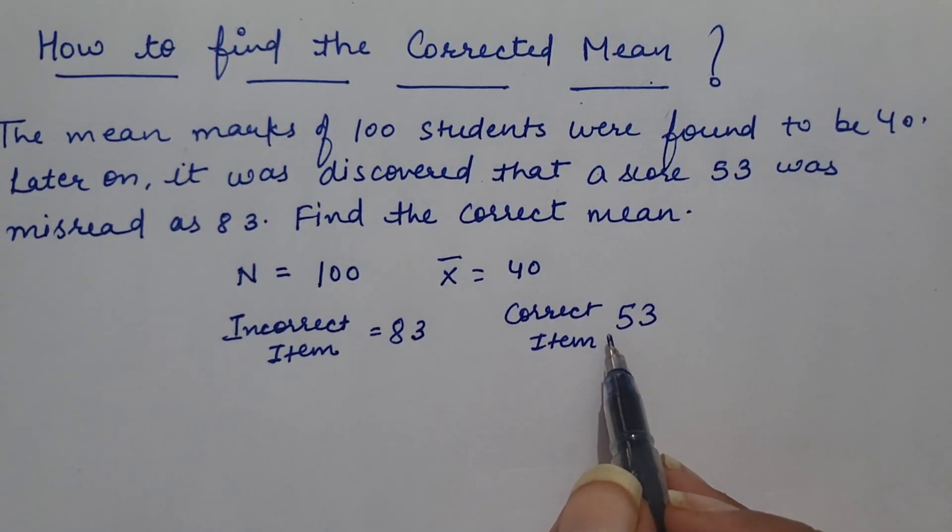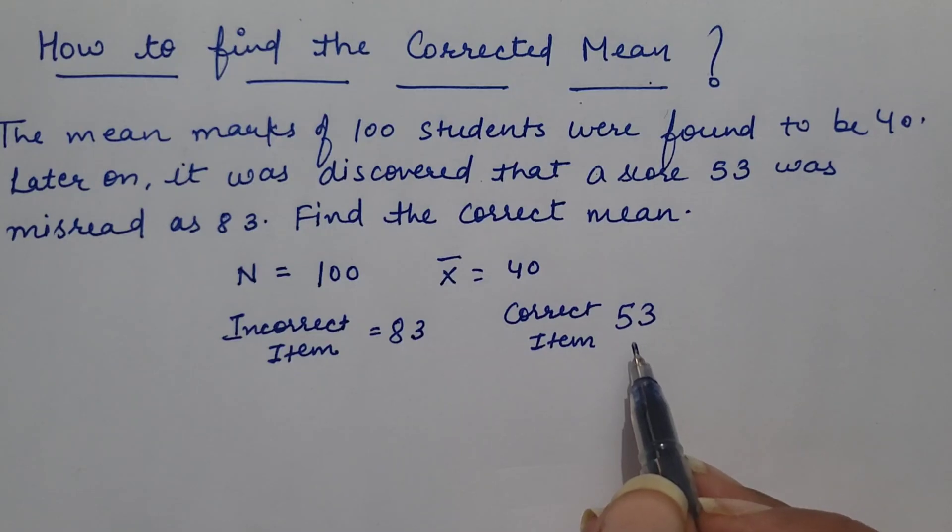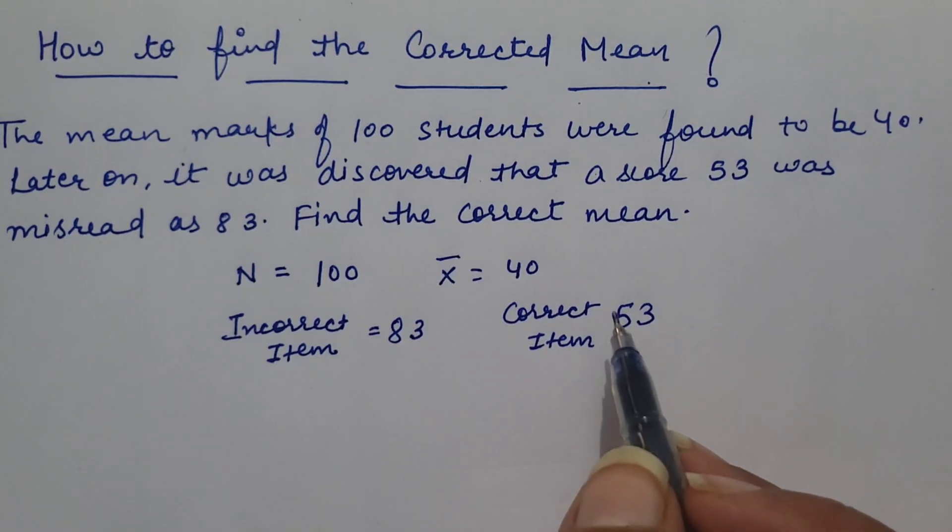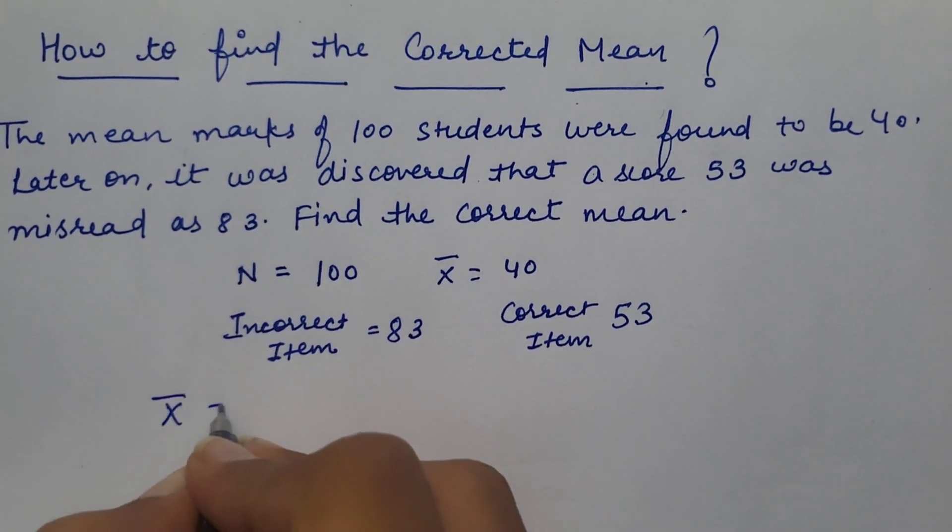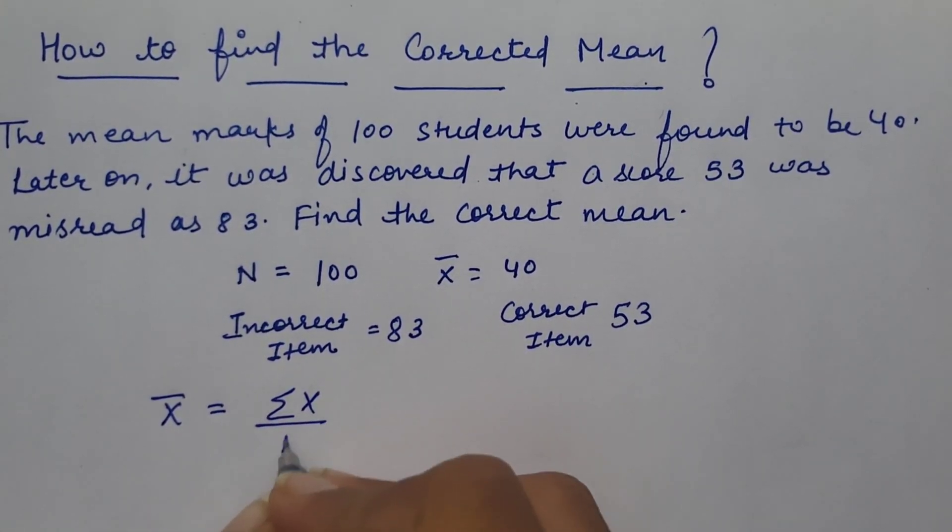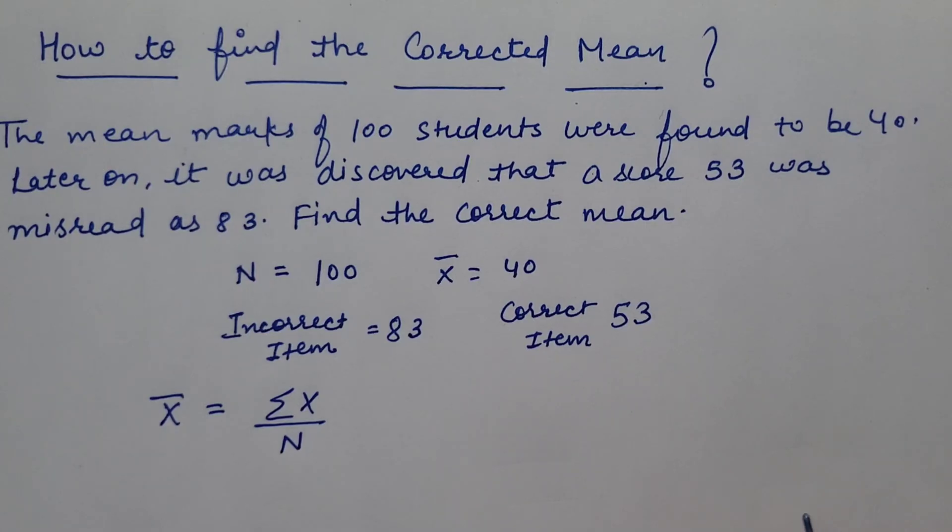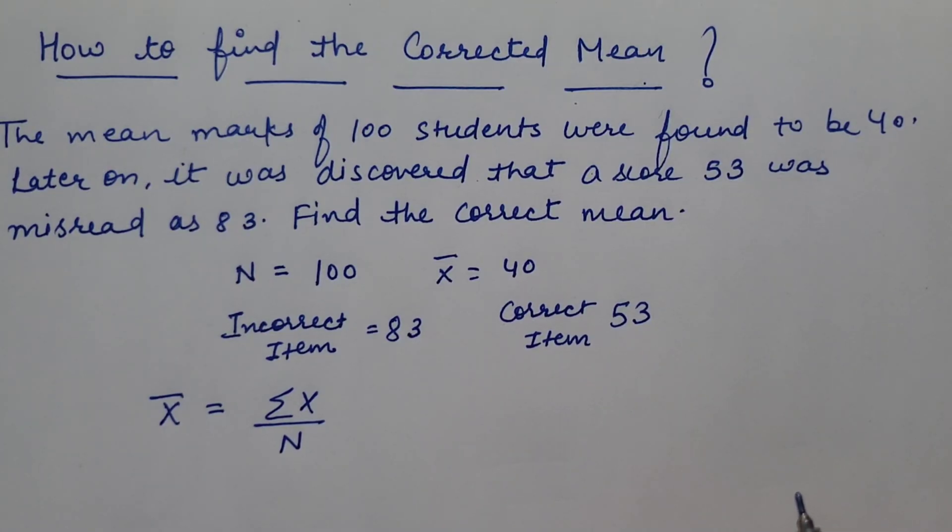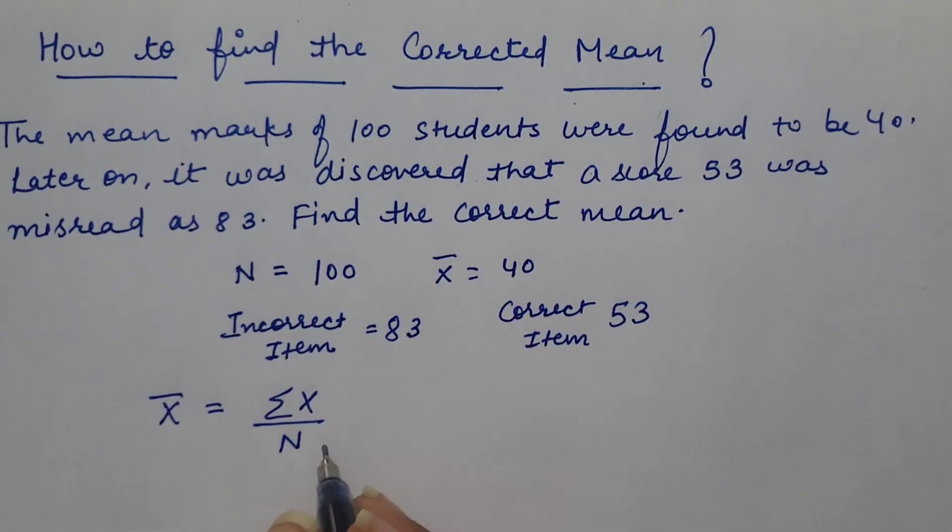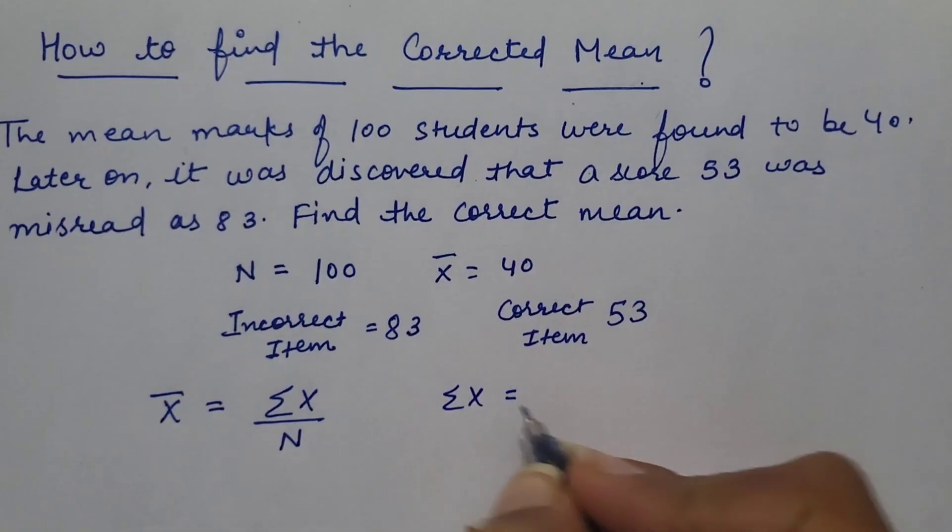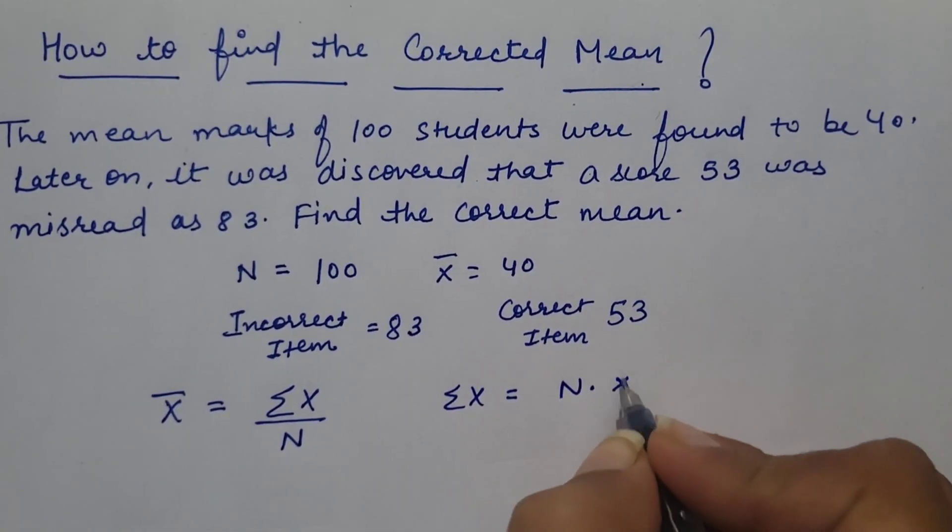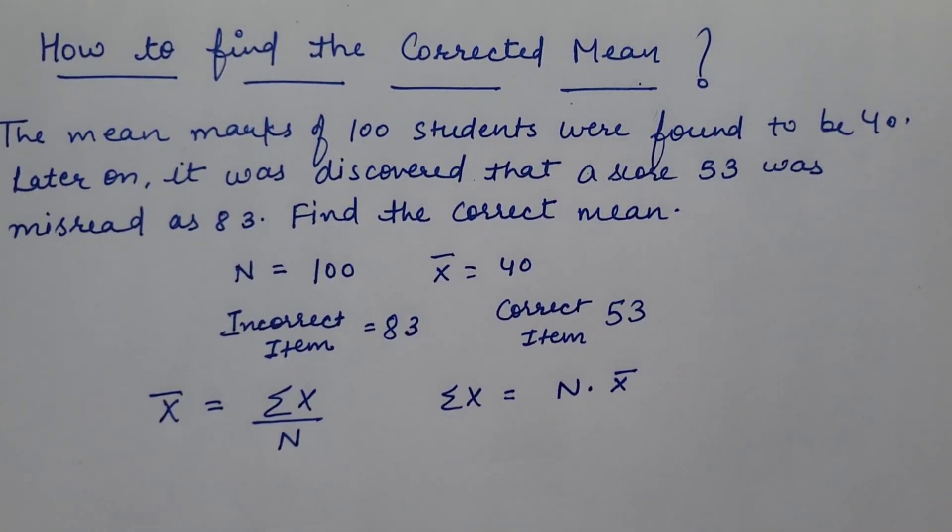Here we need to find the corrected mean. In order to calculate the corrected mean, we all know that mean is equal to summation x divided by n. We are using the property that summation x can be found by multiplying number of observations with the mean.